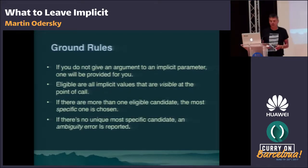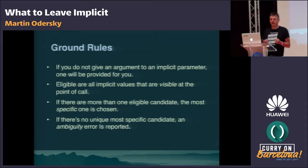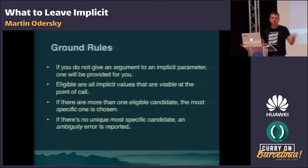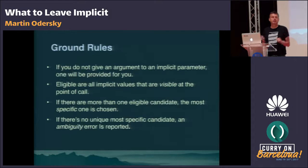The ground rules: if you do not give an argument to an implicit parameter, one will be provided to you. Eligible are all implicit values visible at the point of call — visible means I can refer to them by a single identifier. If there's more than one eligible candidate, the most specific one is chosen using the same rules as overload resolution. If there's no unique most specific candidate, an ambiguity error is reported — the compiler defends against ambiguities.